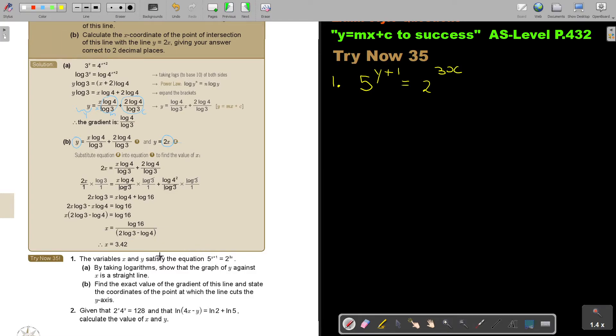So basically, I'm just going to quickly, if I'm looking at this, I'm just going to do by taking logarithms, show that the graph of y against x is a straight line. So I take logs on both sides. And I do the same here.